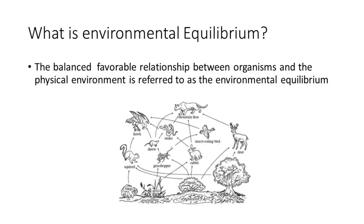A specific example of environmental equilibrium is shown in a food web. Every organism on this Earth is maintained by other animals. If we reduce the number of snakes, the number of rats will increase. If we reduce the number of deer, the number of shrubs and grasses will increase. The environment is fully balanced.